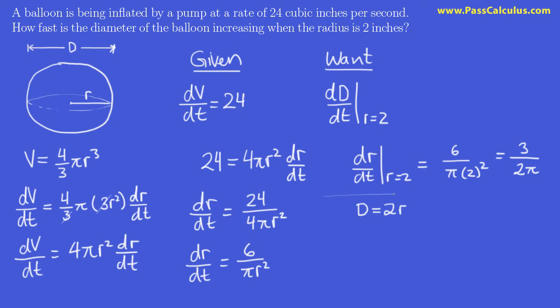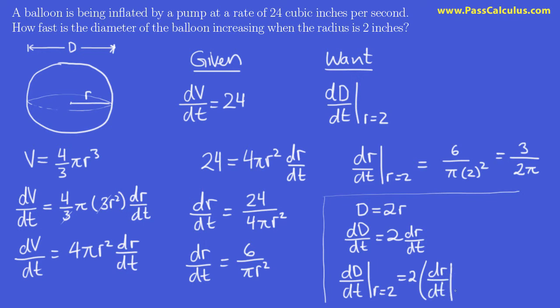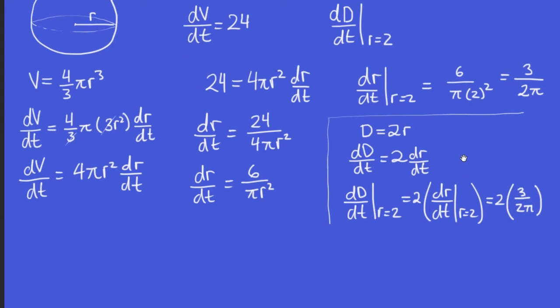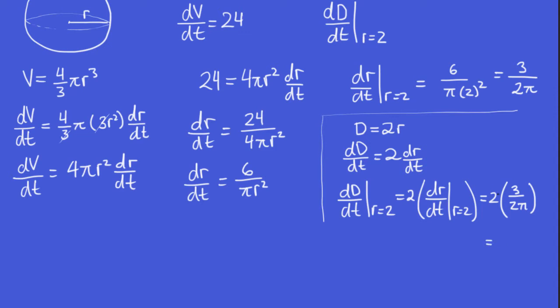So if we start off with this formula, D equals 2r, and take the derivative with respect to time, dD/dt is 2 times dr/dt. And now we're ready to go. dD/dt when r is 2 is simply 2 multiplied by dr/dt when r is 2, which is 3 over 2 pi. Those 2's cancel, and so we get our final answer being 3 over pi.